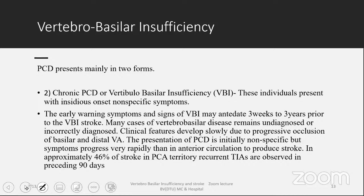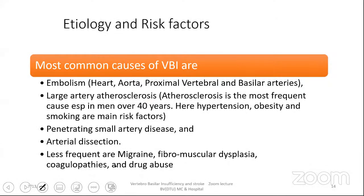In approximately 46% of strokes in the PCA territory, recurrent TIAs are observed in the preceding 90 days. The most common causes of vertebrobasilar insufficiency are: embolism from heart, aorta, proximal vertebral and basilar arteries; large artery atherosclerosis, which is the most frequent cause especially in men over 40 with hypertension, obesity, and smoking as main risk factors; penetrating small artery disease due to lipohyalinotic changes causing lacunar infarcts; arterial dissections; and less frequent causes such as migraine, fibromuscular dysplasia, coagulopathies, and drug abuse.